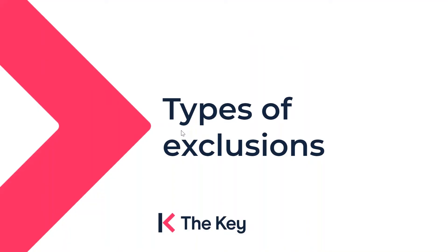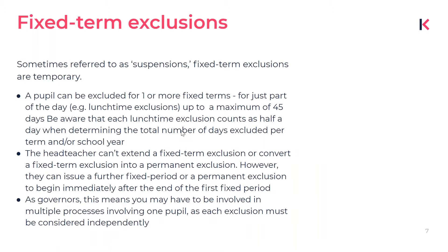There are many different types of exclusions. First, we'll discuss fixed-term exclusions, which are often referred to as suspensions. These are temporary exclusions and they can range from just part of the day, such as during a lunch period, or up to a total of 45 days in a year.